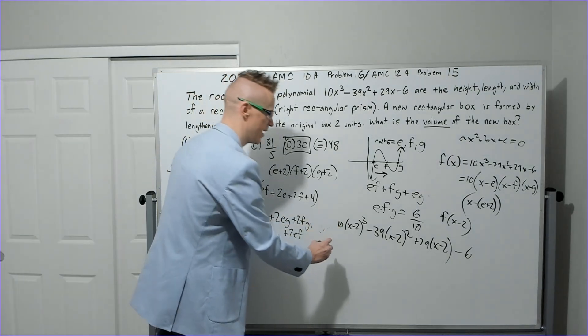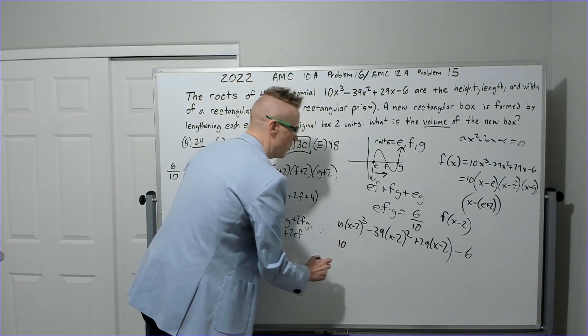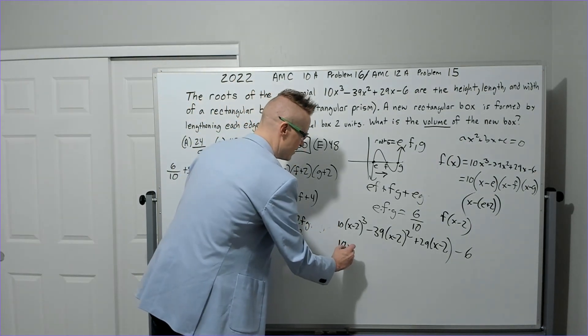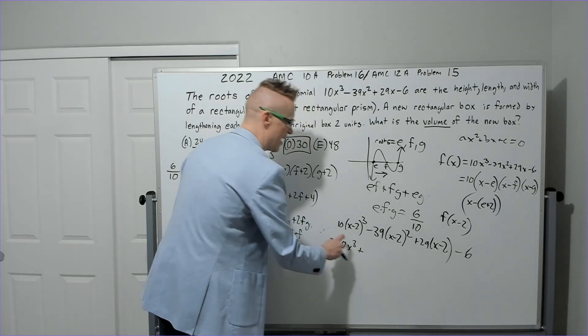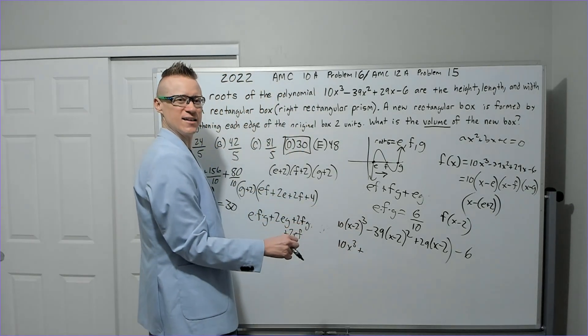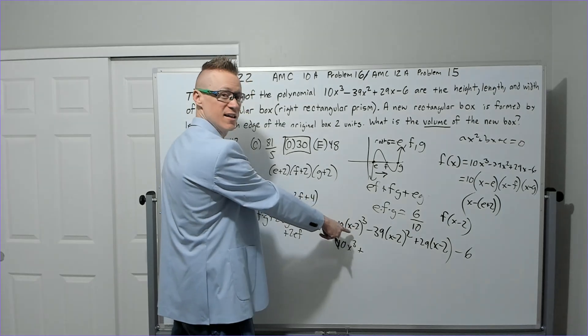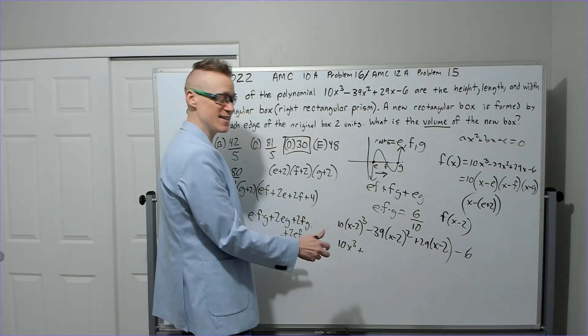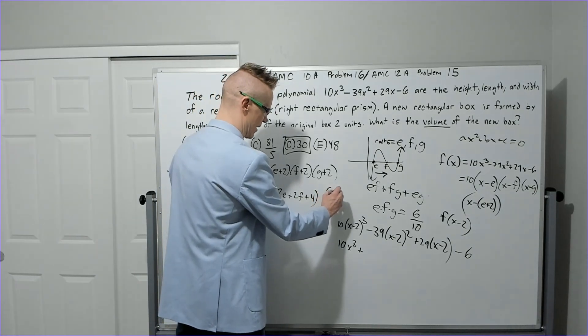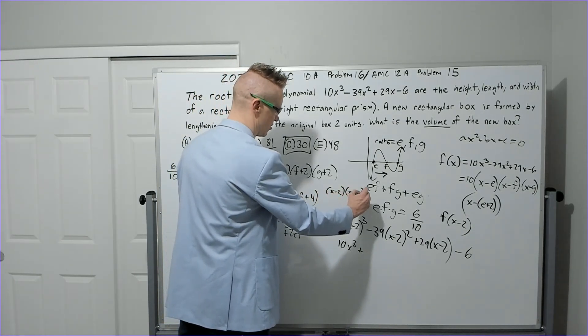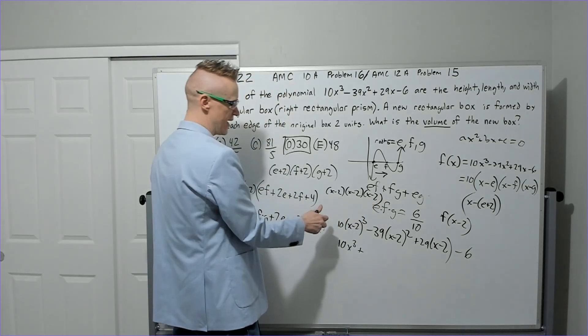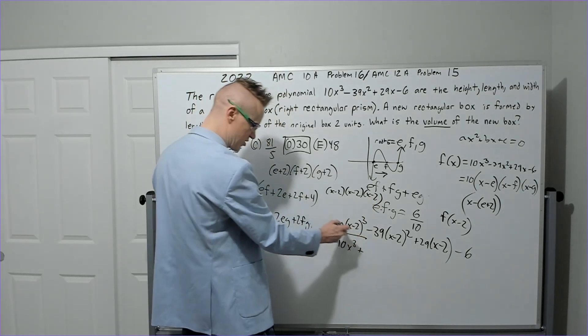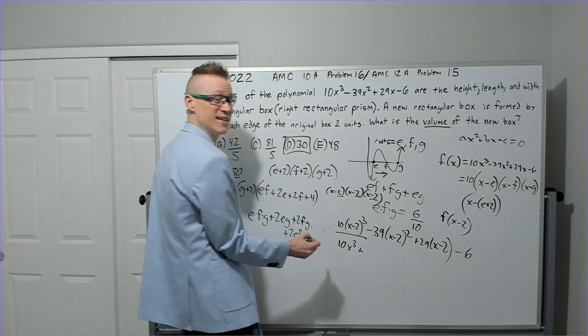So what's my leading coefficient going to be? 10 still. It's on the outside, so you're going to have 10. But there's also going to be—that's going to be 10x³. I'm not going to calculate all of this. I'm just going to find the constant on the end. 10 times... 10 times -8. Because if you think about it, it's (x - 2)(x - 2)(x - 2).